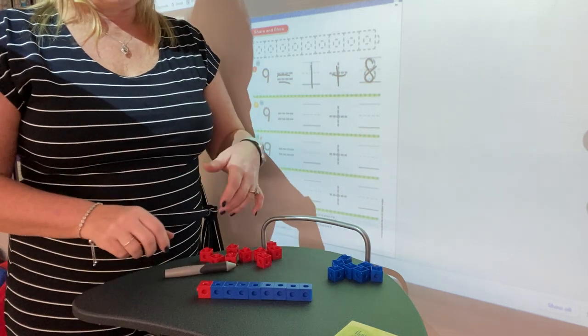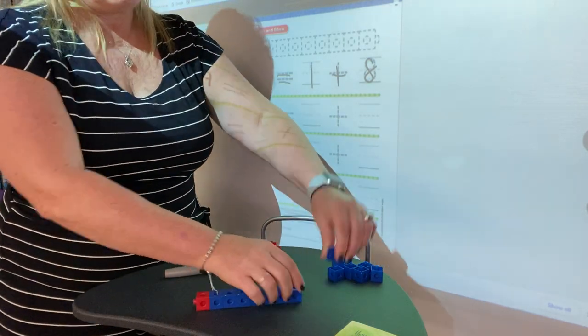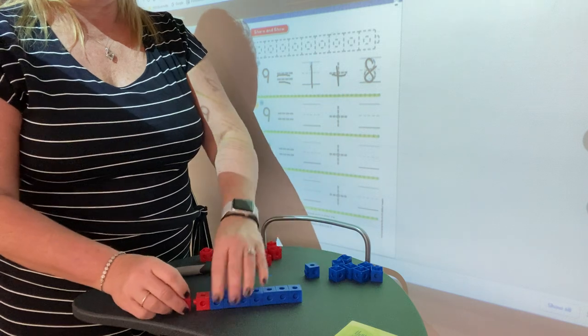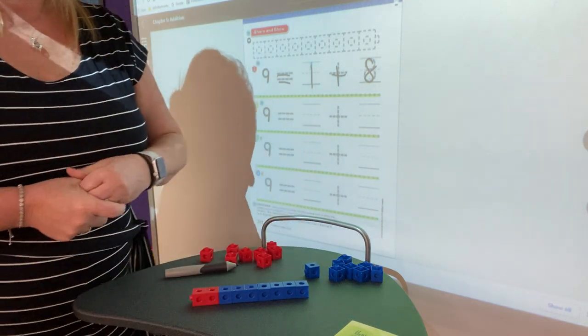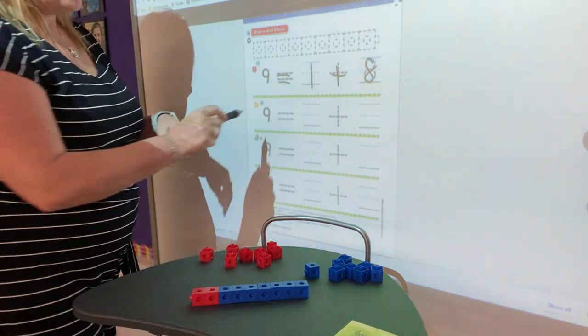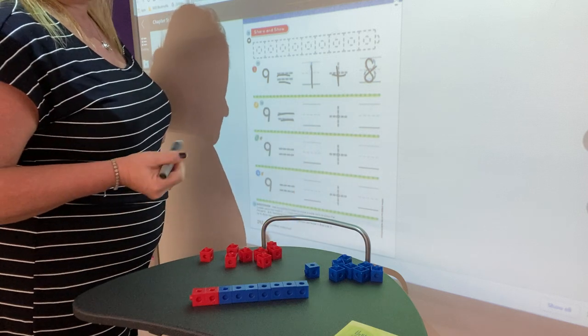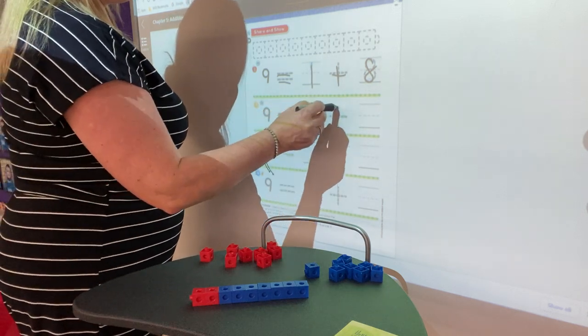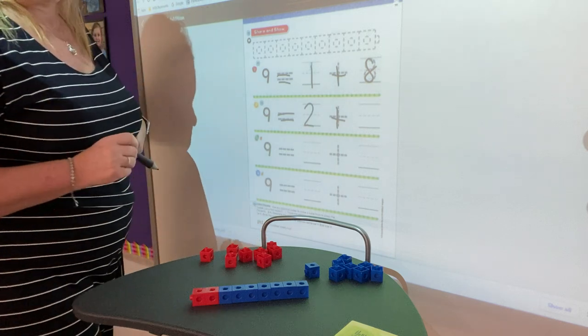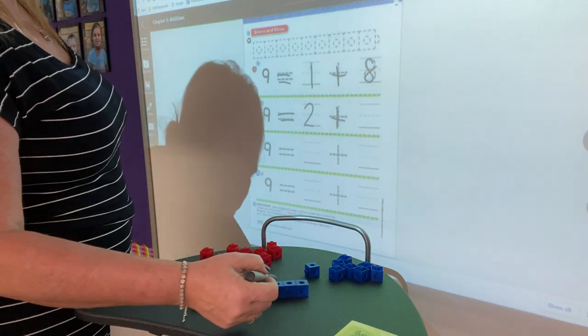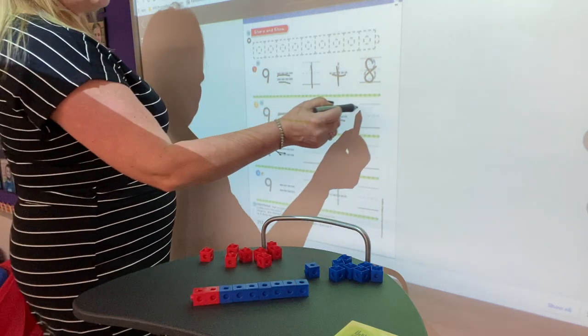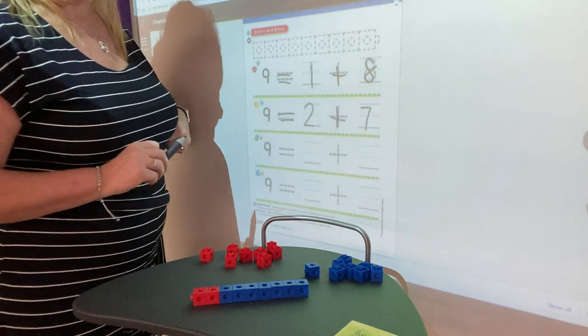Just like yesterday, we're going to take away a blue and add a red. Now what's our number sentence going to be? 9 is equal to how many reds? 2 plus how many blues? 1, 2, 3, 4, 5, 6, 7. 2 plus 7 equals 9.